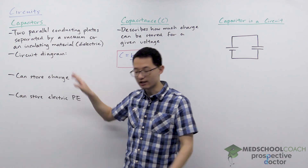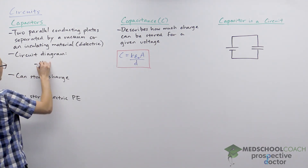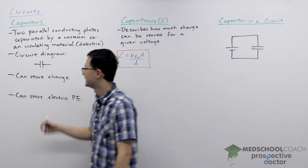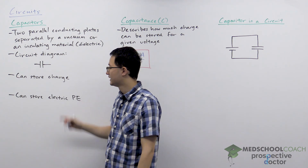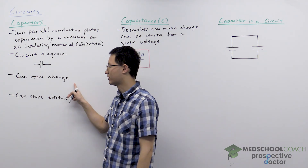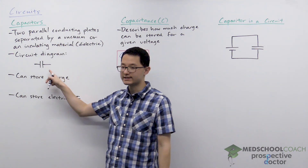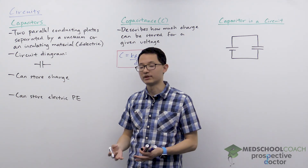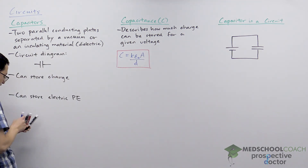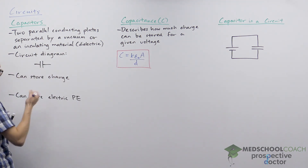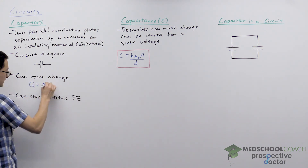Since this is a circuit element it does have a circuit diagram, which is two parallel plates, and unlike a battery the two plates are of the same length. Capacitors are important because they're capable of storing charge, and the two plates can store opposite charge — one plate stores positive charge and the other stores negative charge. The equation for charge stored is Q equals C V.